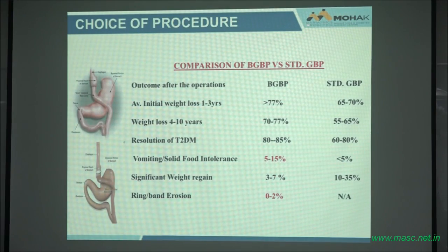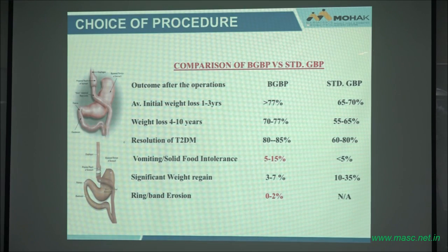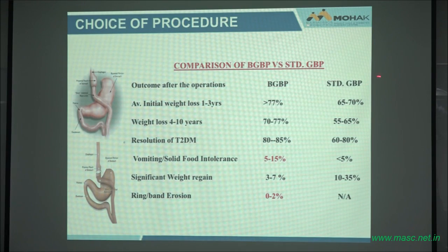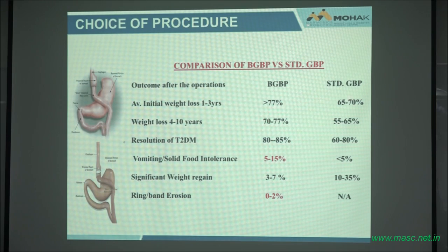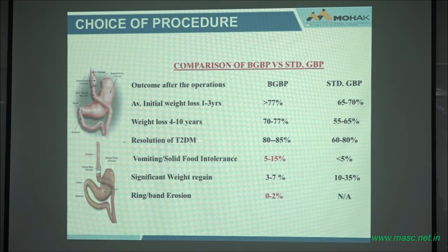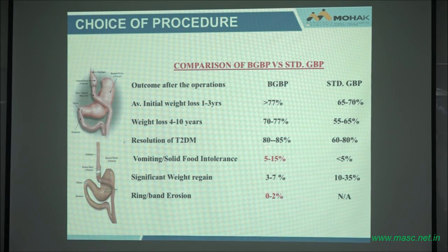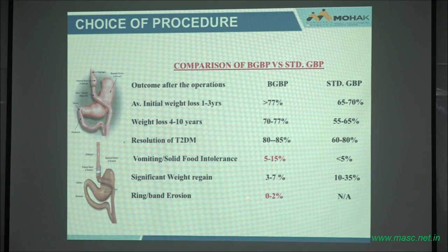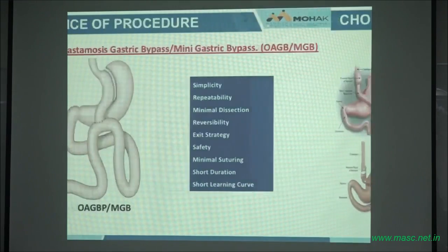This is a review of the literature — we've compared it. If you look at the banded gastric bypass and the standard gastric bypass, in the beginning they look the same. But when you get to the fourth and tenth year, the standard drops to 55% while the banded stays at 70%. Resolution of type 2 diabetes is better with the banded version. There is some food intolerance because of the ring, and about 0 to 2% incidence of erosion.